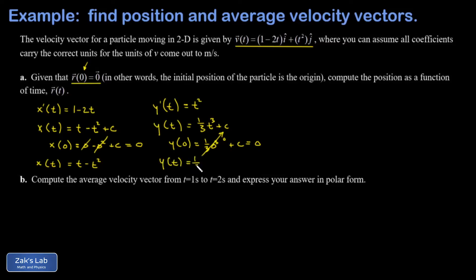And now I have my y coordinate as a function of time, it's just one third t cubed. Finally we can write down our position vector as a function of time, and in general that's an x of t i hat plus a y of t j hat. And plugging in our x and y we get t minus t squared i hat plus one third t cubed j hat.